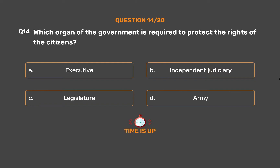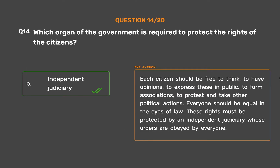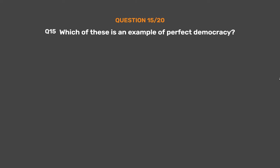The correct answer is Option B: Independent judiciary. Each citizen should be free to think, to have opinions, to express these in public, to form associations, to protest and take other political actions. Everyone should be equal in the eyes of law. These rights must be protected by an independent judiciary whose orders are obeyed by everyone.